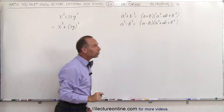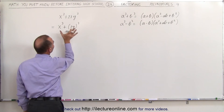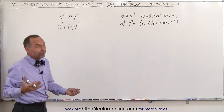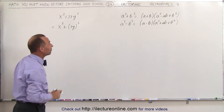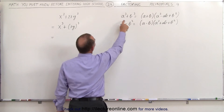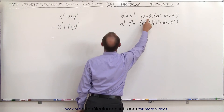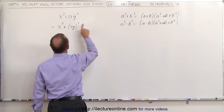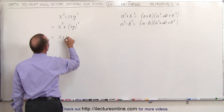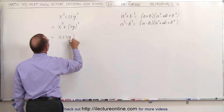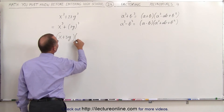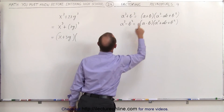So in the same token, when we see something like this, we have to recognize it and we can factor it. Since it's the sum of cubes, it is a plus b — where a is x, b is 3y — so this becomes x plus 3y. Then times a squared.